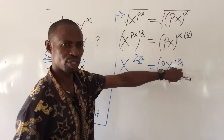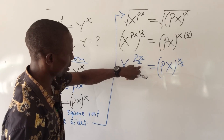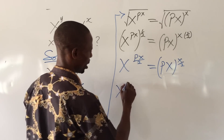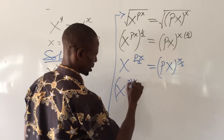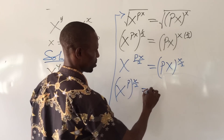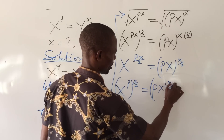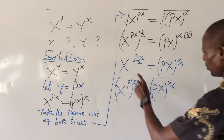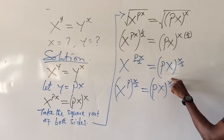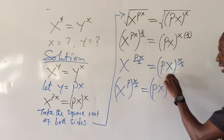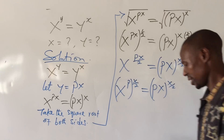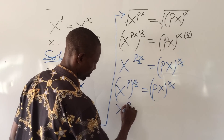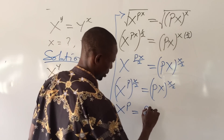Now that we have x over 2 as a power, I can equally manipulate x over 2 from the other side. This will now become x to the power of p times x over 2 equal to px to the power of x over 2. A very sweet trick has emerged — look at the powers. The powers are the same: x over 2 on both sides. So since the powers are the same, I can equate the bases, which gives me x to the power of p equal to px.